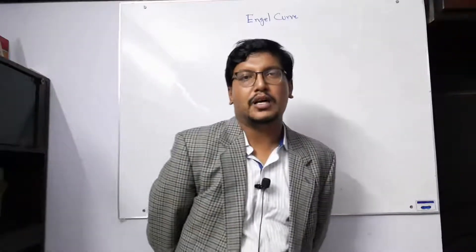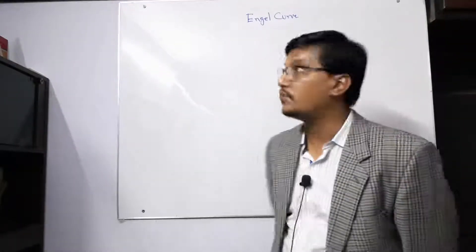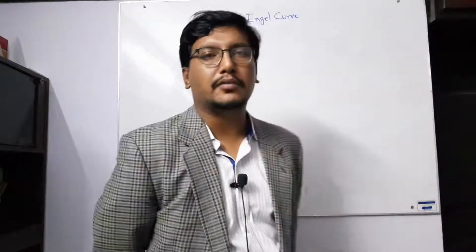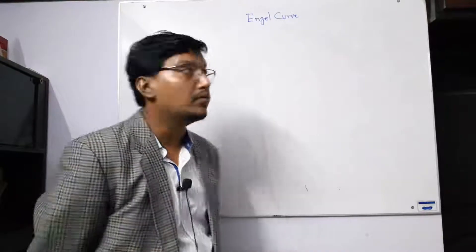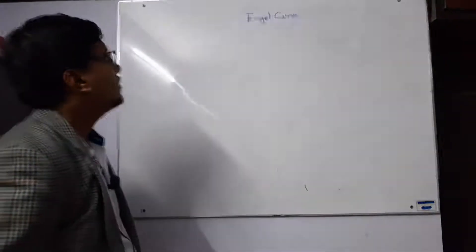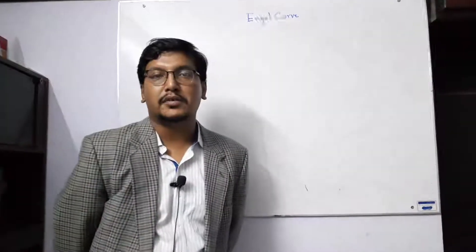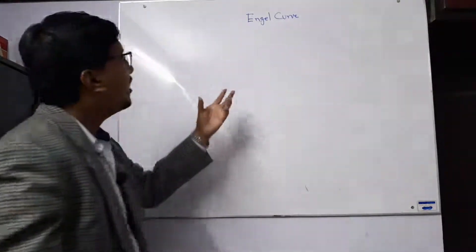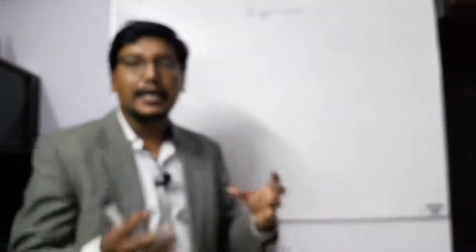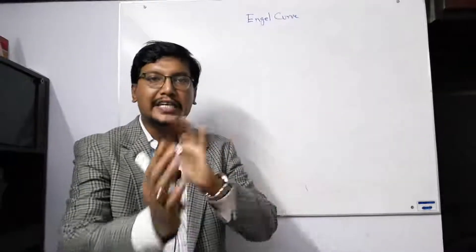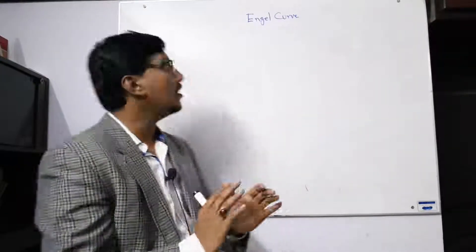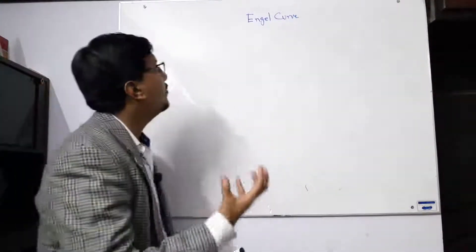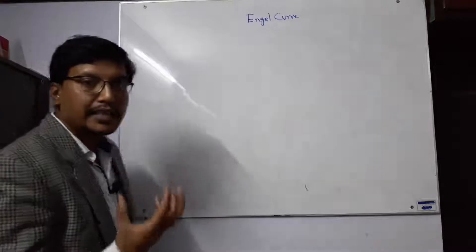We are here with more lecture on the Engel curve. We discussed in the last class about the income consumption curve — the relationship between income and commodity consumption. The Engel curve talks about the same relationship between income and consumption of a commodity, but from a different angle. The Engel curve basically helps us understand these things.